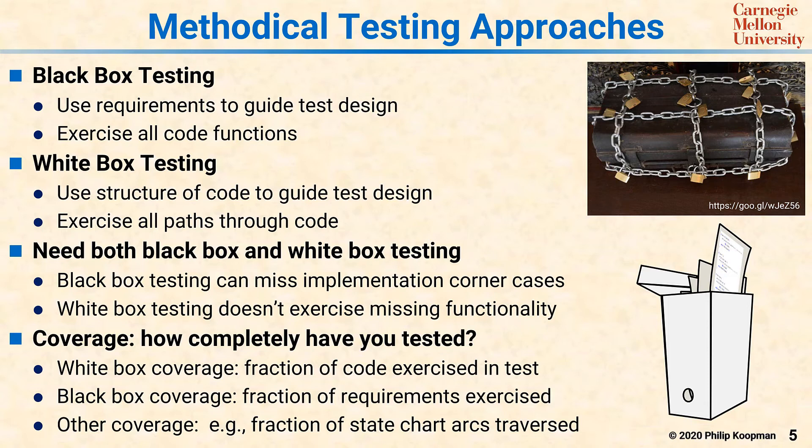Black box testing also has coverage, but it's measured differently. It's going to be measured as the fraction of requirements exercised. So if you have 73 requirements and you only exercise 72, that's 72 out of 73 black box coverage.